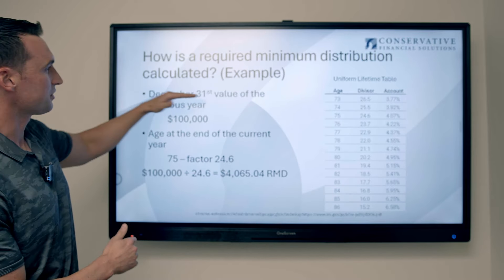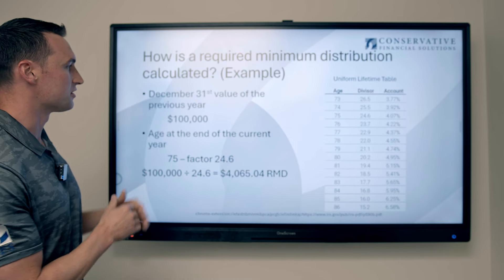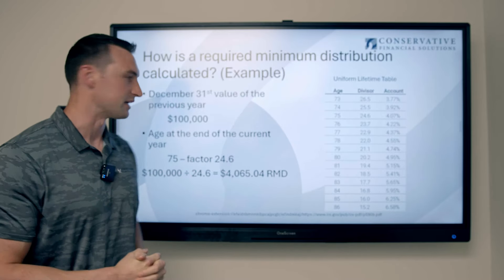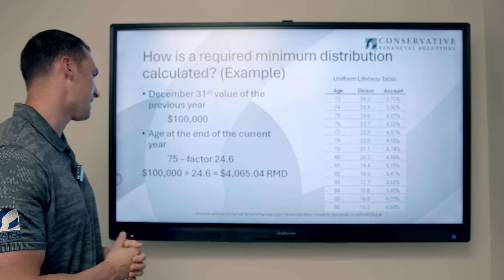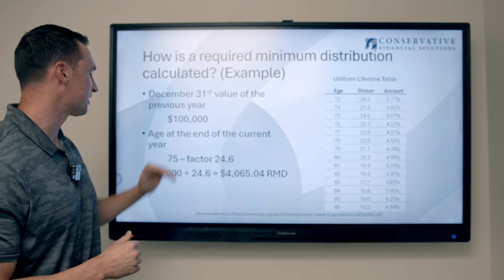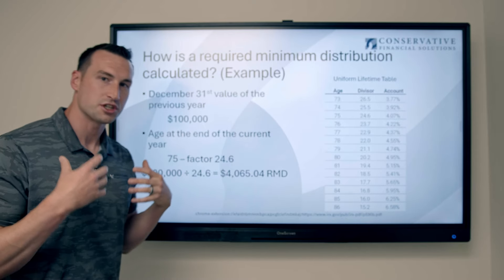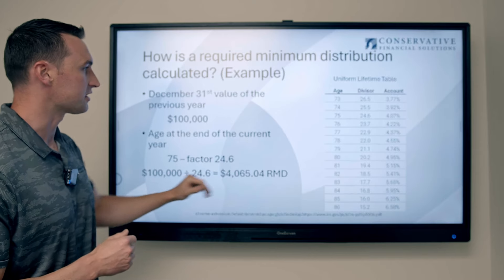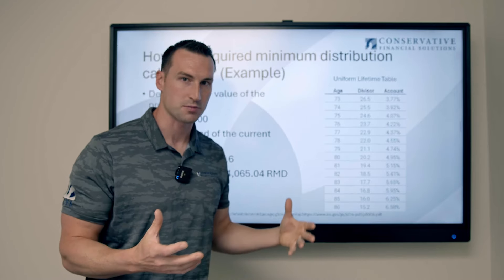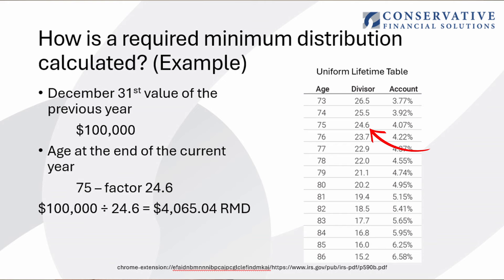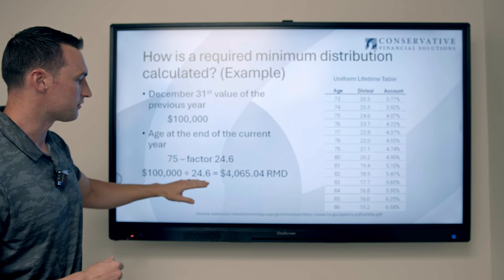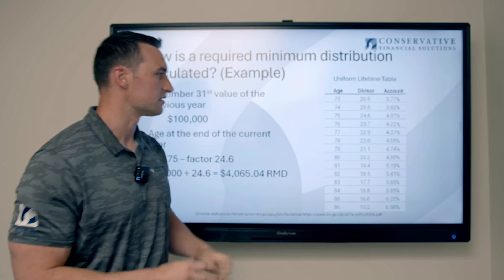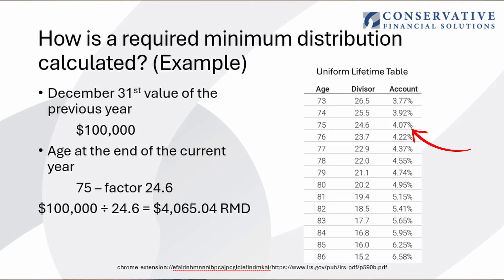In our example, we take the December 31st value as of the previous year — in today's terms, that would be your December 31st, 2023 balance. We'll use $100,000 to keep the math simple. Then you take your age at the end of the current year — let's say at the end of 2024 your age will be 75. Going to the IRS's uniform lifetime table, the factor at age 75 is 24.6. Dividing $100,000 by 24.6 gives a required minimum distribution of $4,065.04 — about a 4.07% distribution rate.